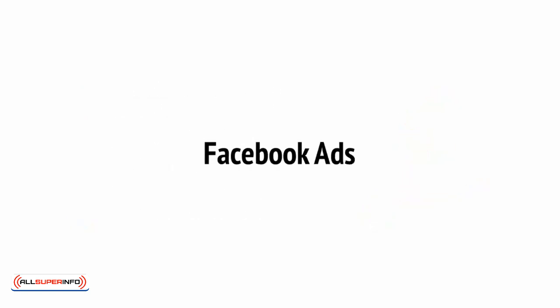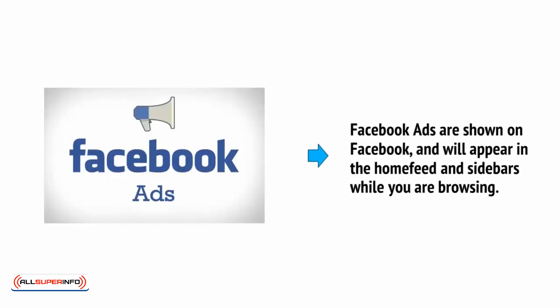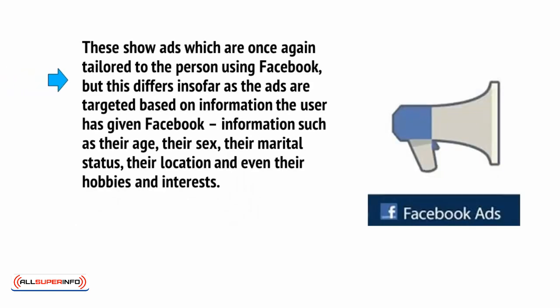Rounding out the holy trinity of PPC networks is Facebook Ads. Facebook Ads are similar to Google AdWords or Bing Ads in terms of being PPC, but the difference is in where the ads are shown and how they're targeted. As you might have guessed, Facebook Ads are shown on Facebook and will appear in the home feed and sidebars while you're browsing. These ads are tailored to the person using Facebook, targeted based on information the user has given Facebook — such as their age, their sex, their marital status, their location, and even their hobbies and interests.